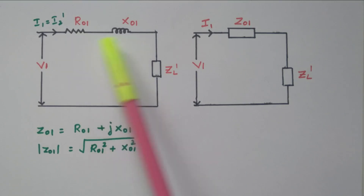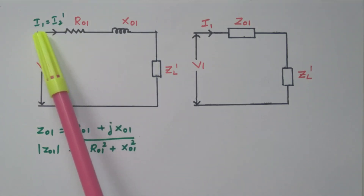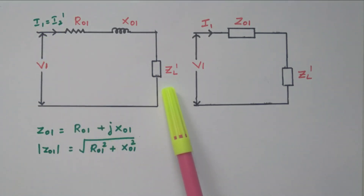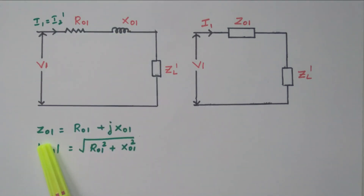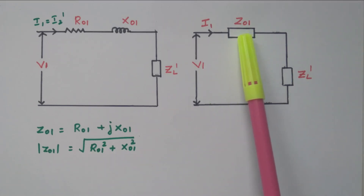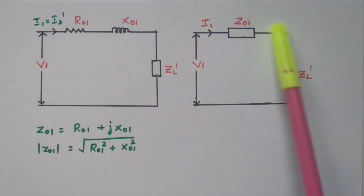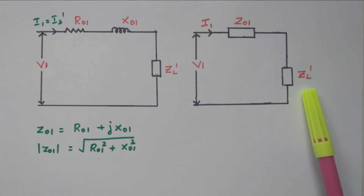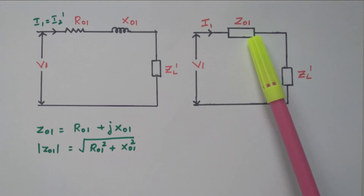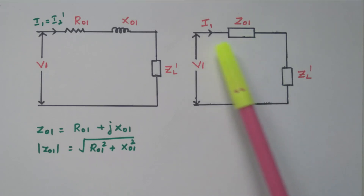We can write the combined series resistance as R01 and combined series reactance as X01. The current I1 equals I2 dash, with V1 and ZL dash in the circuit. R01 and X01 together form the total equivalent impedance Z01, where the modulus of Z01 equals the square root of R01² plus X01². Finally, we have a very simplified equivalent circuit: applied voltage V1, impedance Z01 representing all primary and secondary impedance referred to the primary, and load impedance ZL dash.